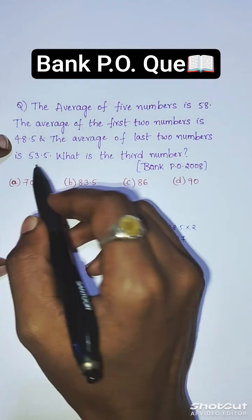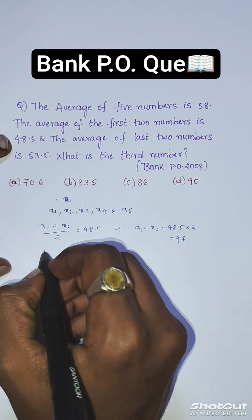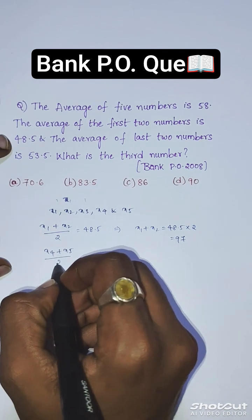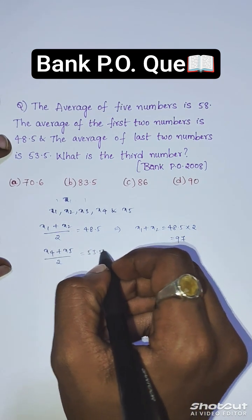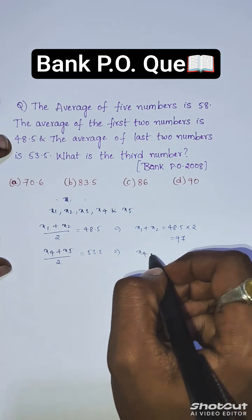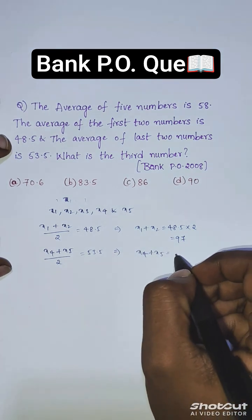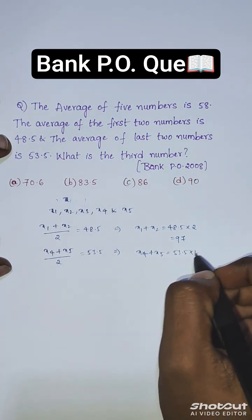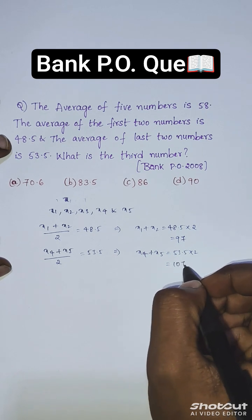The average of the last two numbers is 53.5, so (x4 + x5)/2 = 53.5. From this we get x4 + x5 = 53.5 × 2, which comes to 107.